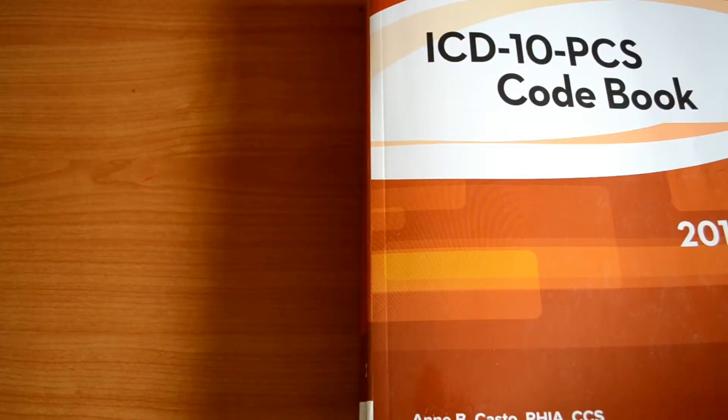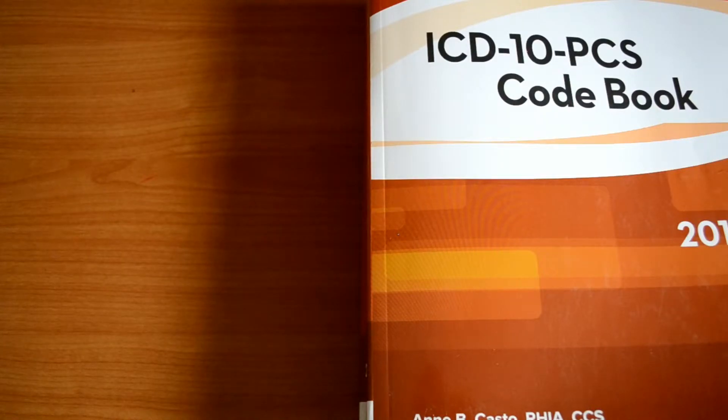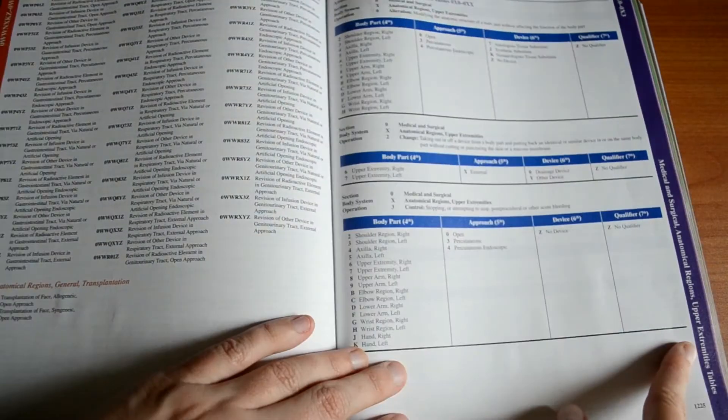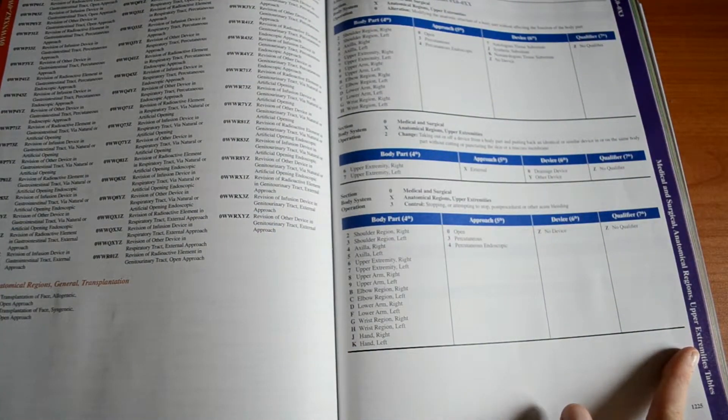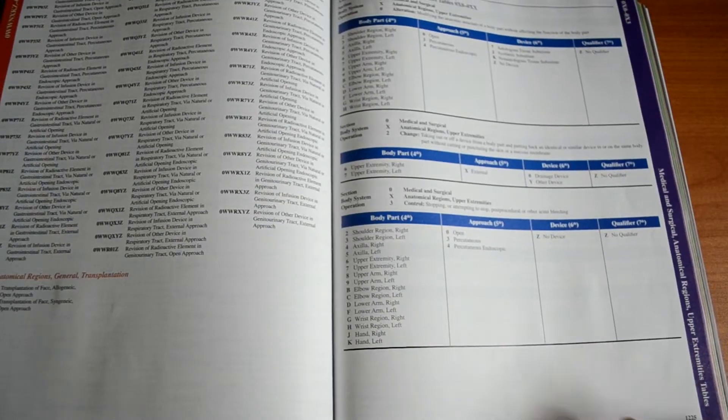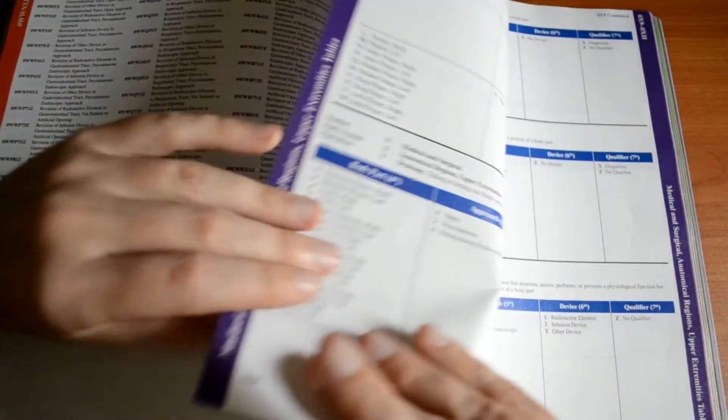Since we know that detachment is found in the anatomical region chapters of the code book, those are the chapters we want to go to which are near the very end of the medical and surgical section. And we want to go to the upper extremities because the humerus or the arm is in the upper extremities. Page three to detachment.